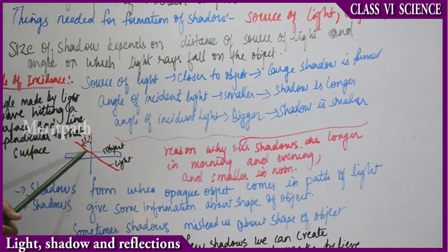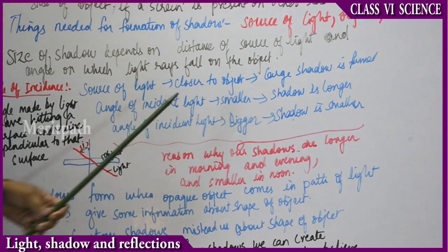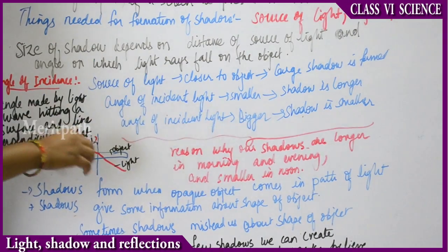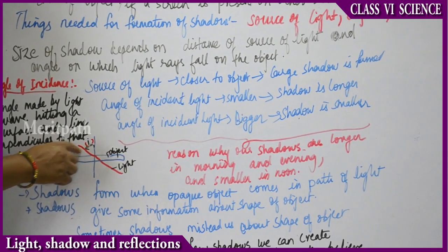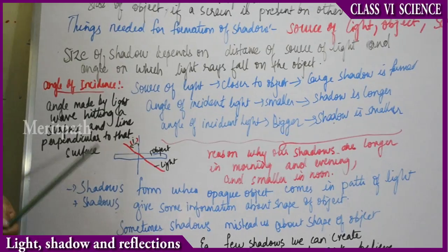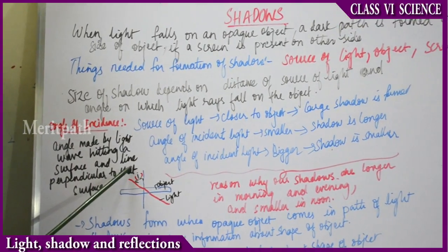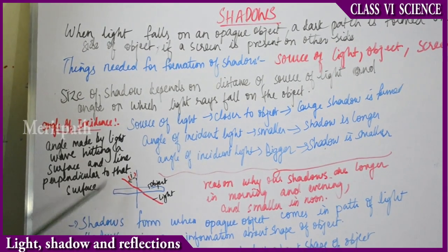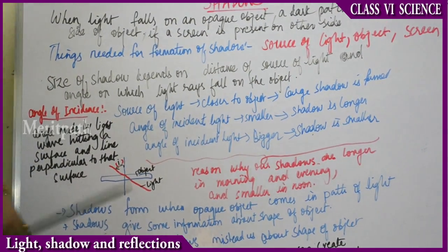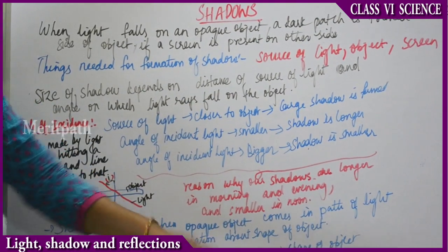The angle of incident light also determines the size of the shadow. If the angle here is smaller, the shadow will be longer. If this angle is bigger, the shadow is smaller. The angle of incidence is the angle made by the light wave hitting a surface and the line perpendicular to that surface.